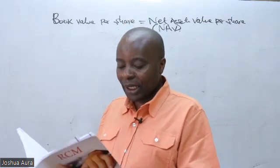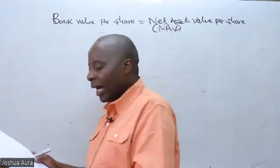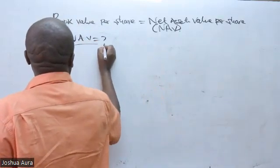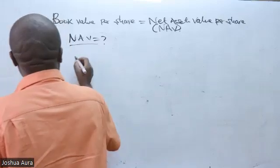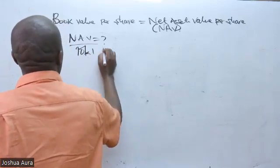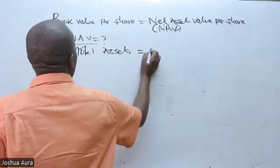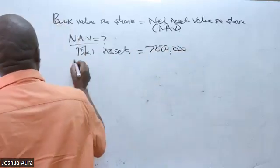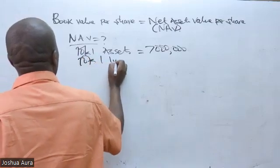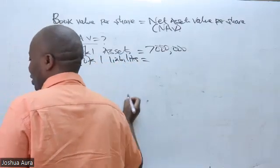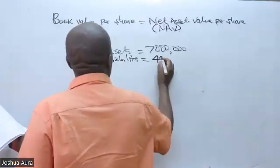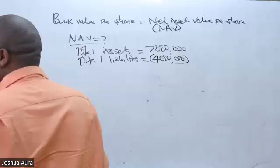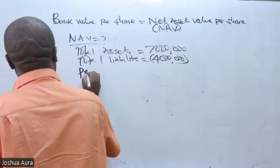In this particular case, I need to get the NAVPS — the net assets value. I can see I have total assets of 7 million, total liabilities of 4 million. From the definition of NAVPS, these will be subtracted. I can see preference share capital of 500,000.